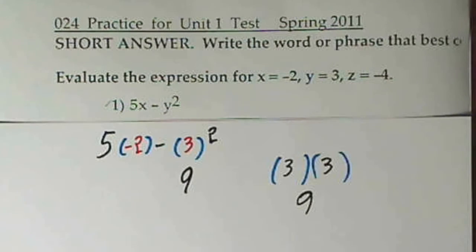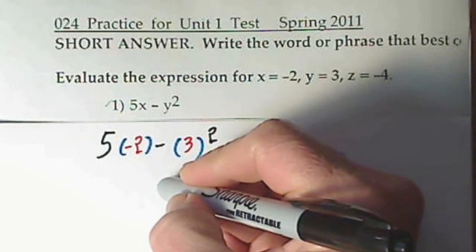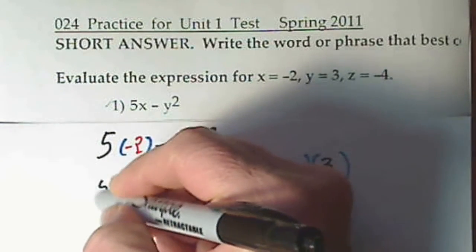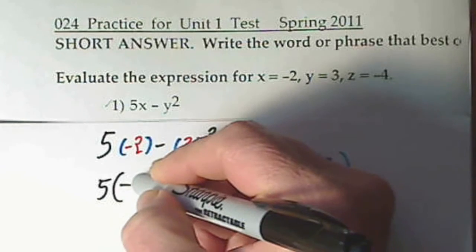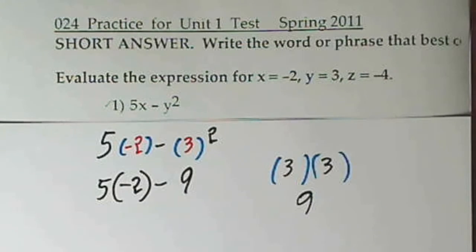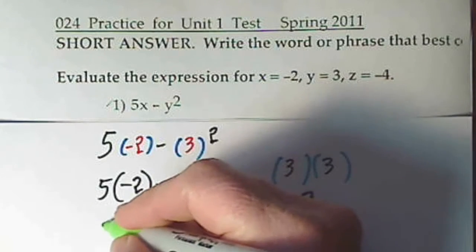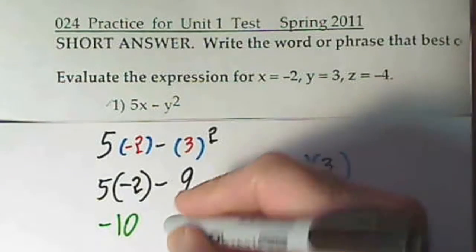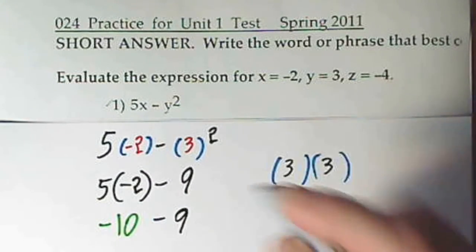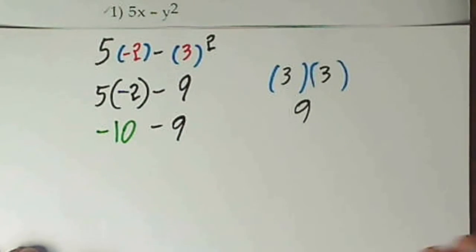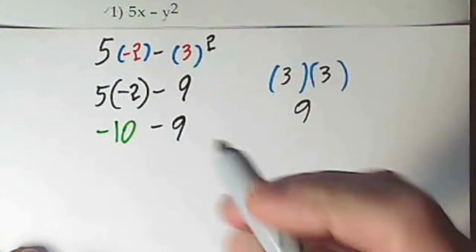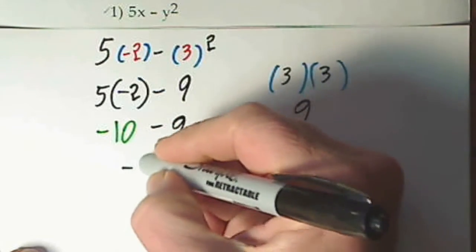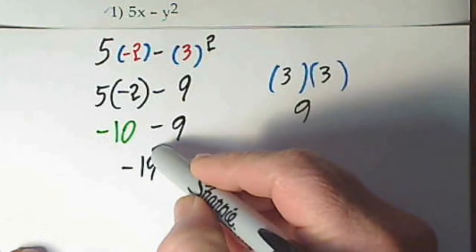And now I'll bring down everything that I haven't touched. This negative sign and 5, negative 2. Now you will take care of multiplication. 5 times negative 2 is negative 10. Bring down what you haven't touched. I'll slide this up now. And the signs are the same, so you add and keep the sign. And that's your answer.